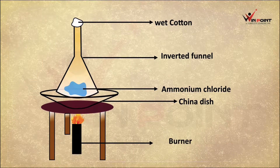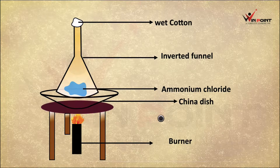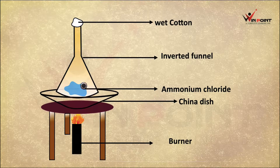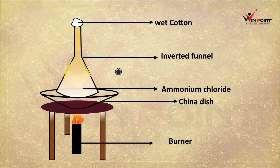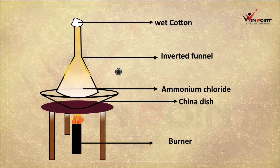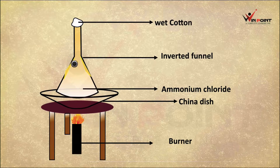We are taking ammonium chloride and heating it in a china dish. When we heat ammonium chloride, it converts from solid state to gaseous state — this process is known as sublimation. Because of the wet cotton, the gaseous ammonium chloride will undergo sublimation again, meaning the gas will convert back to solid, which explains the yellow deposit seen on the funnel.